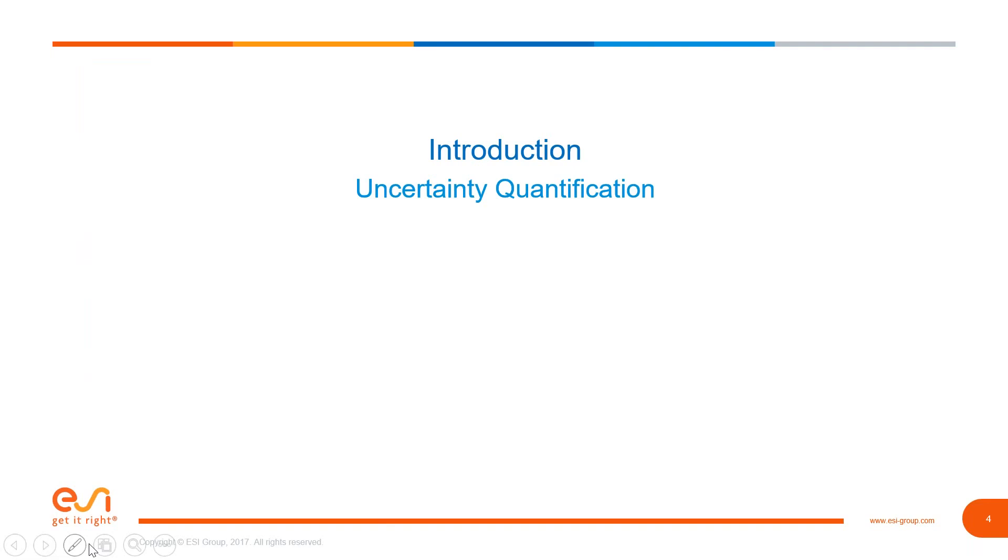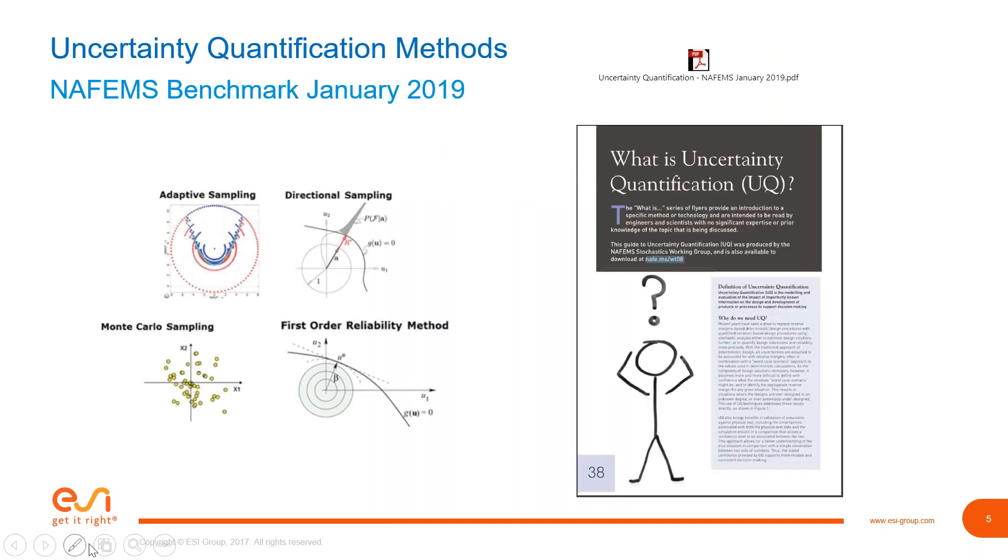So without further ado, let's introduce uncertainty quantification and what it has to do with our subject of today, the statistics of things. You might know that we live in an uncertain world. Even the organization today, we don't even know where we land tomorrow. But we might be able to quantify that somehow. There are some methods for that. The last edition of the NAFEMS magazine benchmark had a short article about uncertainty quantification.